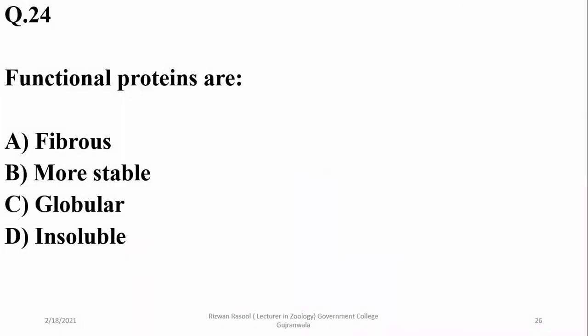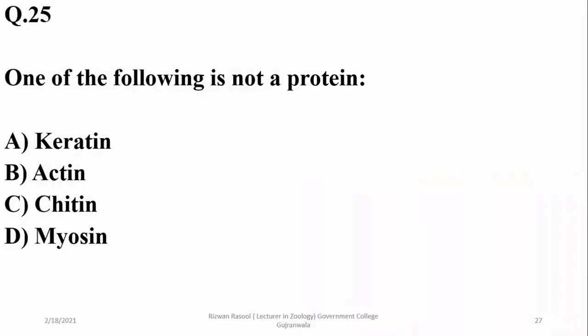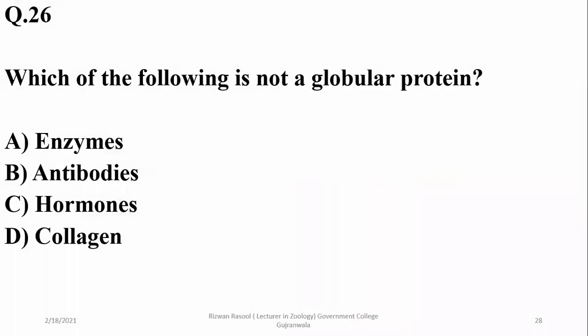Functional proteins are globular while structural proteins are fibrous, more stable and insoluble. One of the following is not a protein: keratin is a protein, actin, myosin are proteins, but chitin is a polysaccharide carbohydrate, so C is the right option. Which of the following is not a globular protein? Enzymes, antibodies, and hormones are globular proteins, but collagen is a fibrous protein.